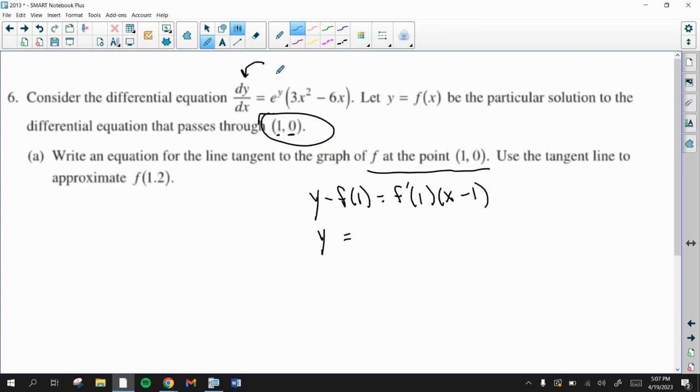When we substitute 1 in for all the x's and 0 for the y's, we will get the derivative is e to the 0 times 3 times 1 minus 6 times 1. e to the 0 is 1. 3 minus 6 is negative 3. So 1 times negative 3 is negative 3. And there's the equation of the tangent line. So that was easy.